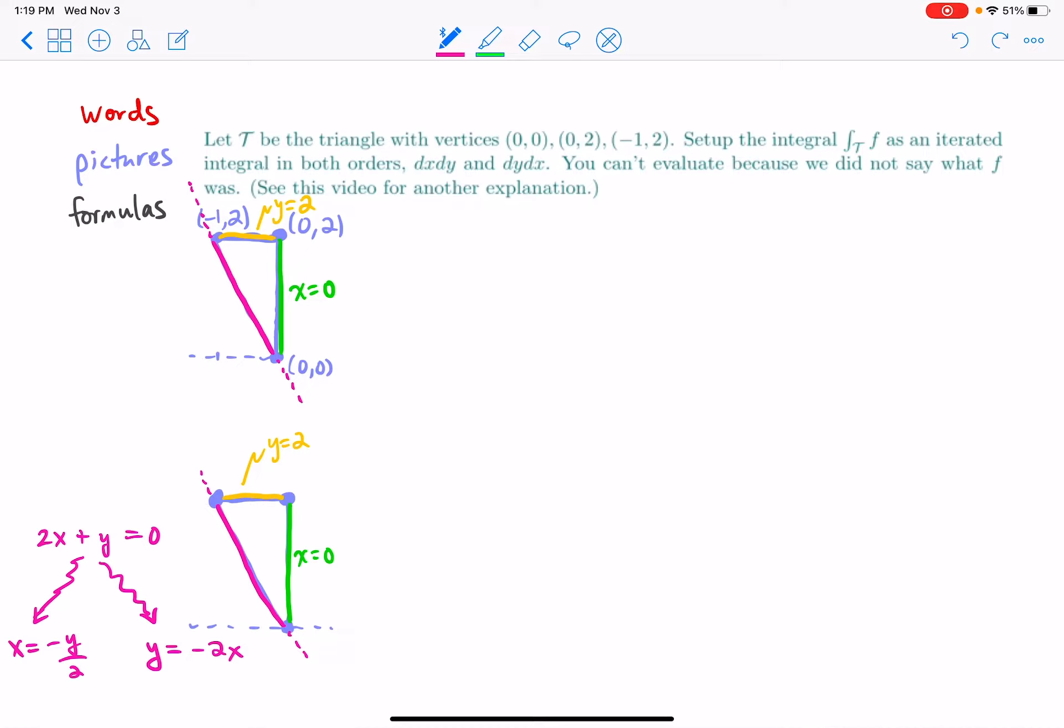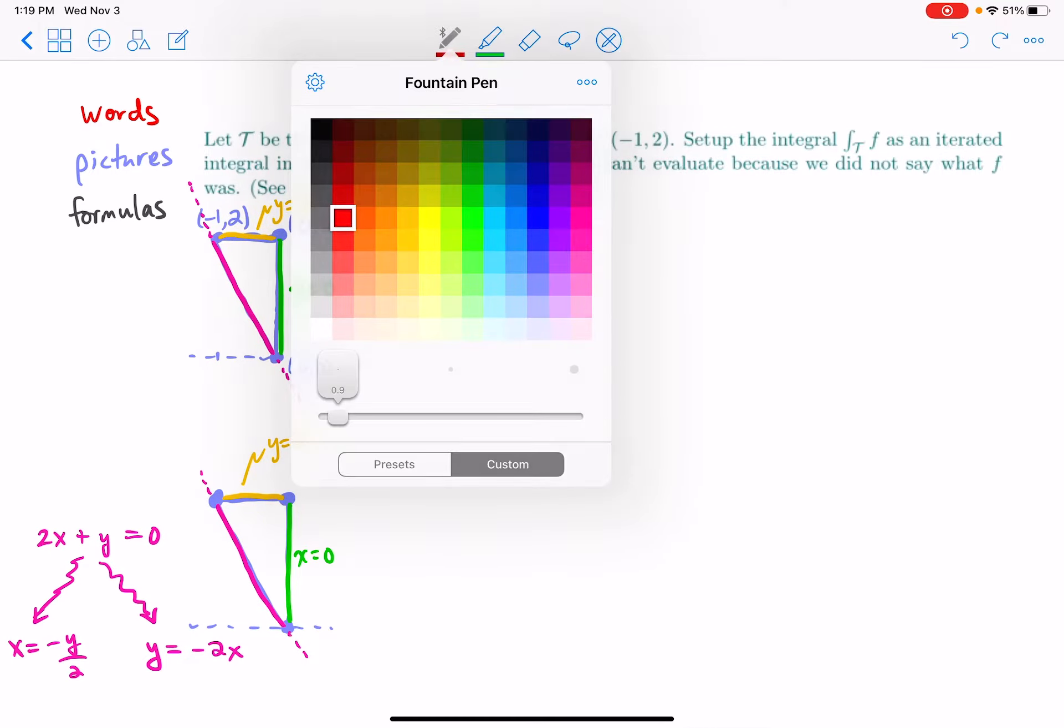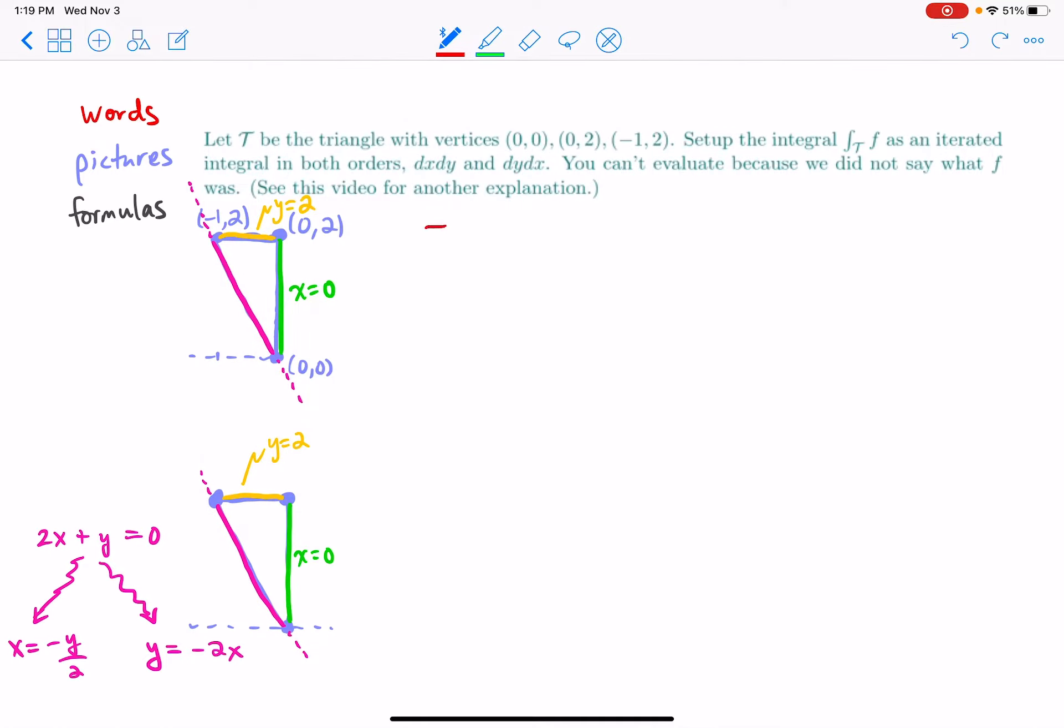Okay, so there's basically two ways to do this. We can fix x and integrate the y dimension, then integrate the result, integrate the x dimension after.